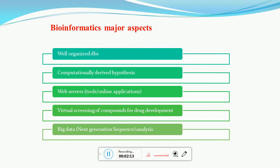So what are the major aspects of bioinformatics? The first one is well-organized databases. Whenever we are using certain tools of bioinformatics, we require raw data in the form of protein structures, protein sequences, DNA sequences, or gene expression analysis data. All these things have to be stored in databases. A well-organized database means we have a well-organized structure where we store all the data to be used at the appropriate time for the appropriate software.